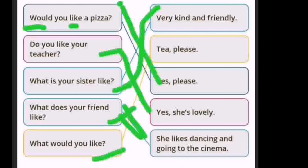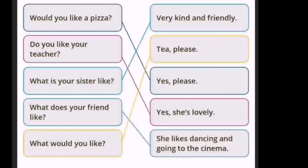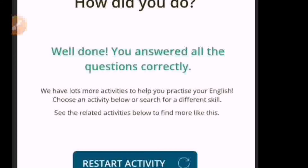Next: 'What would you like?' — the answer is 'Tea, please.' This is similar to the first question 'Would you like a pizza?' You use 'would like' to ask someone politely — you can say 'Tea, please', 'Juice, please', or 'Coffee, please.' Now let's check the answers — you are correct! Well done, he answered all the questions correctly. This website is great!